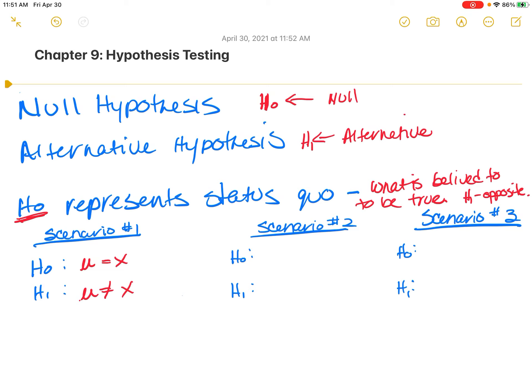Very similar. If we say that the mean is greater than or equal to X, the alternative is the mean has to be less than X. And then finally, if the mean is less than or equal to X, the alternative is the mean is greater than X.